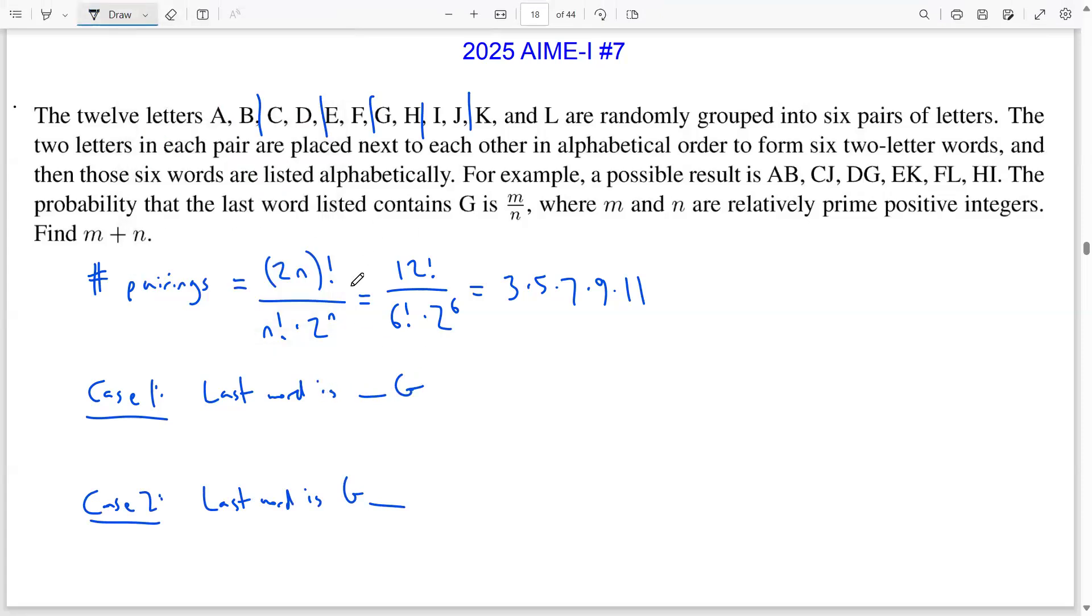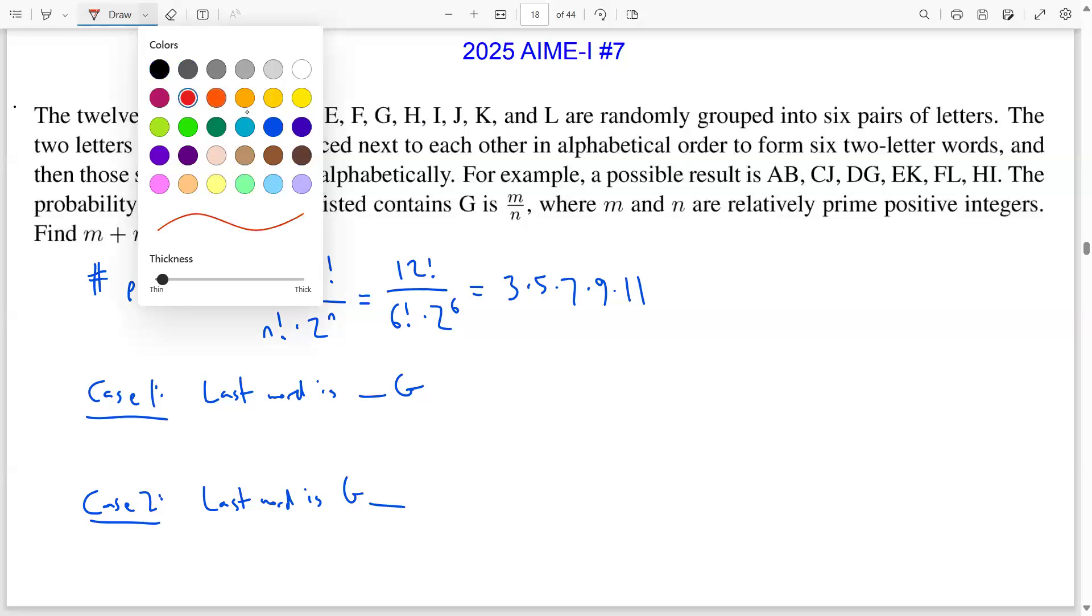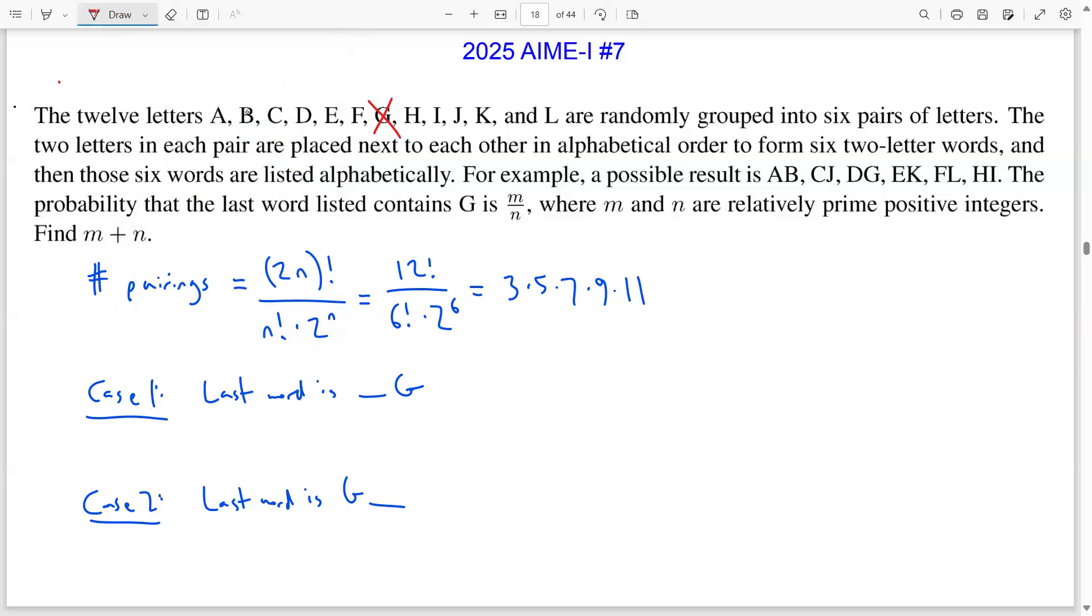So for case one, where the last word ends with a G, this means that the first letter must be any of the letters A through F. And it turns out that the last word in this case must be FG. So why is this? Because we want the word containing G to come last alphabetically. So if my last word was not FG, let's say it was EG, then we're going to have five other words that come before EG alphabetically. The problem is that there are only four letters that can possibly be the start of a word. And so if the last word is anything but FG, it will not be the last word, which is a contradiction. So for case one, the last word must be FG.